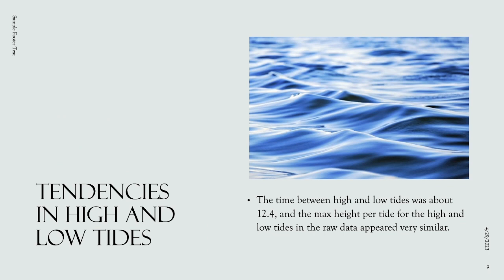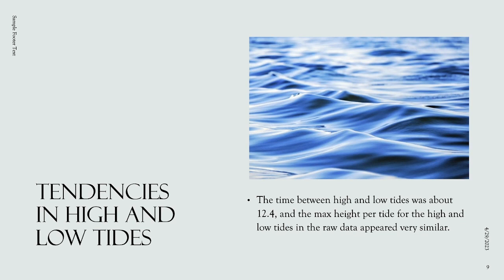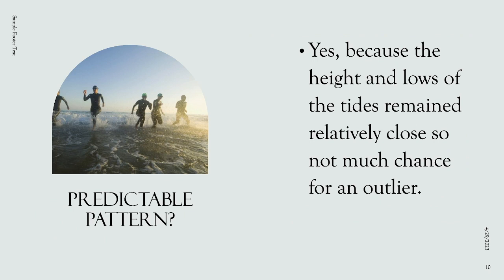Looking at tendencies in high and low tides: the time between high and low tides was about 12.4 hours, and the max height per tide in the raw data appeared very similar. There was a predictable pattern because the highs and lows of the tides remained relatively close, leaving little chance for an outlier.